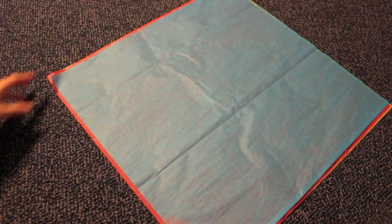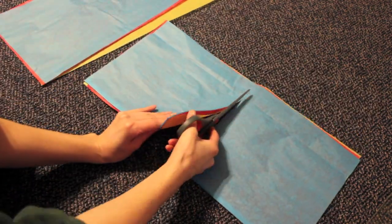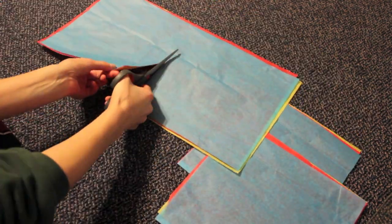For my centerpiece, I used yellow, red and blue tissue paper, placing them on top of each other. You want to cut the tissue paper in half and then in halves again, creating four sets of squares.